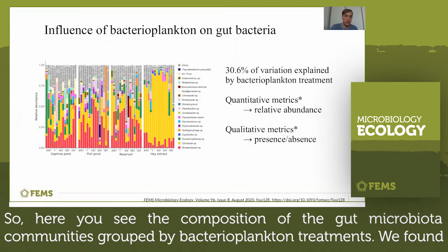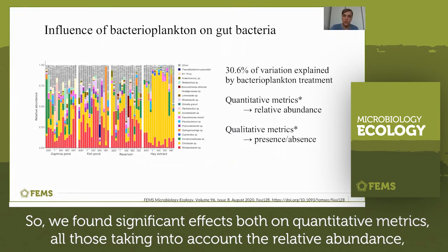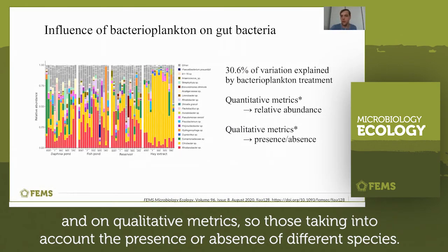Here you see the composition of the gut microbiota communities grouped by bacterioplankton treatments. We found that about 30 percent of the variation in gut microbiota community composition was explained by the bacterioplankton treatment. We found significant effects both on quantitative metrics — those taking into account the relative abundance — and on qualitative metrics, those taking into account presence or absence of different species.